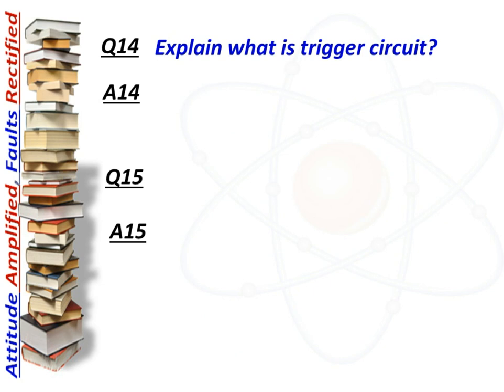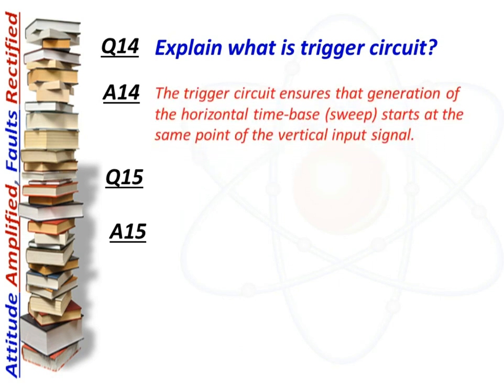Next question: what is a trigger circuit? Answer: The trigger circuit ensures that the oscillation of the horizontal time-based generator starts at the same point of the vertical input signal.